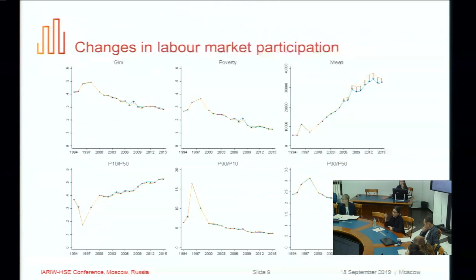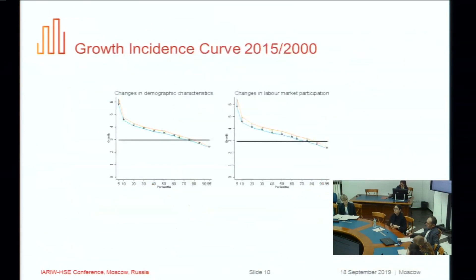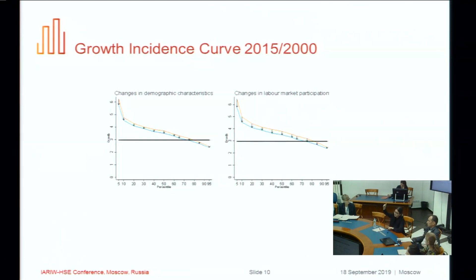For changes in labor market participation, we find a similar result: this determinant does not explain changes in income inequality and poverty, but it somehow decreased average income. The growth incidence curve shows the growth of each income percentile between 2015 and 2000. The lowest tail of income distribution experienced much higher income growth than those at the top, which is very natural. We also see that the evolution of these two determinants decreased income growth across the whole income distribution, for each and every income percentile.